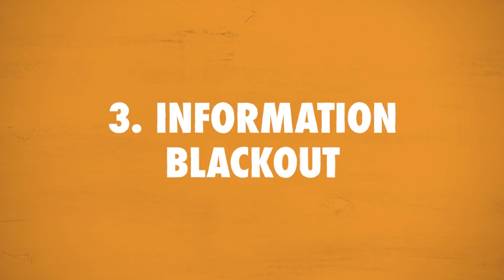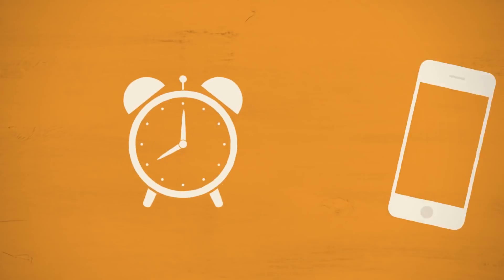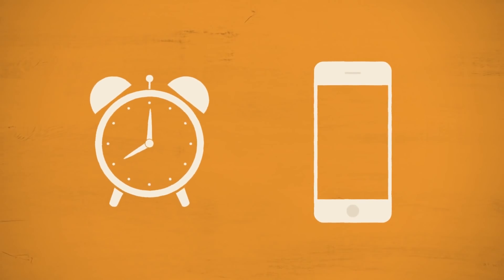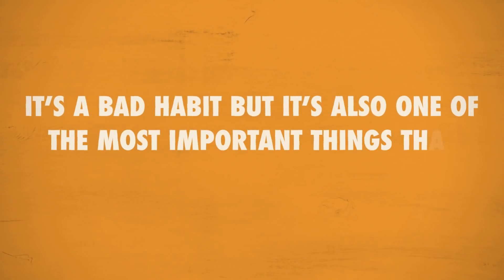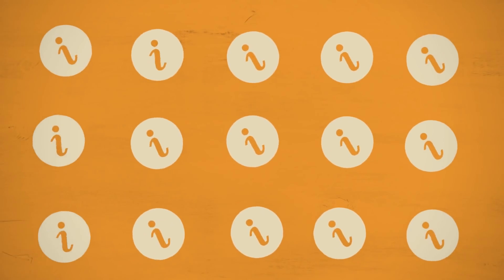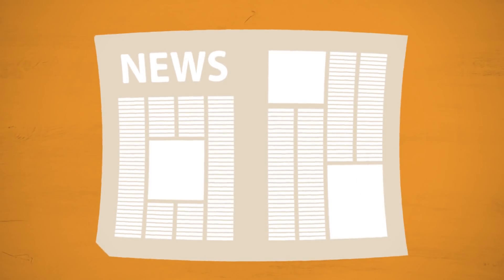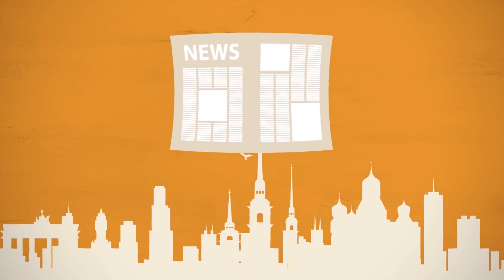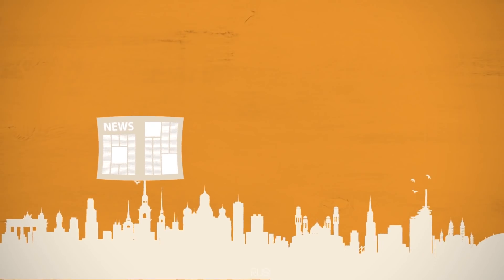3. Information blackout. We've all woken up in the morning and checked our phones before even getting out of bed. It's a bad habit, but it's also one of the most important things that access to the internet has given us. Information anytime and anywhere we want it. Gone are the days that we have to peruse through pages and pages of the newspaper to find out what's happening today in our city or on the other side of the world.